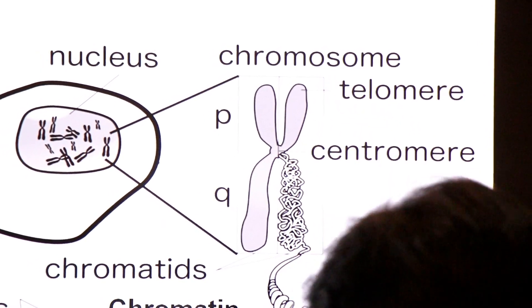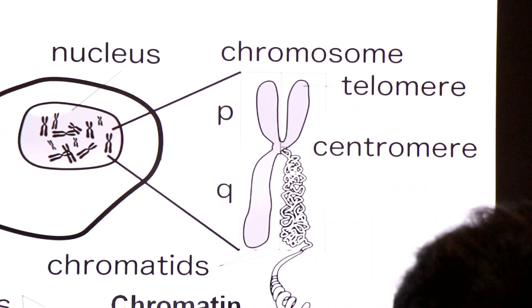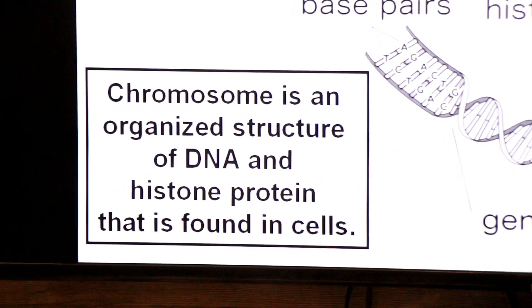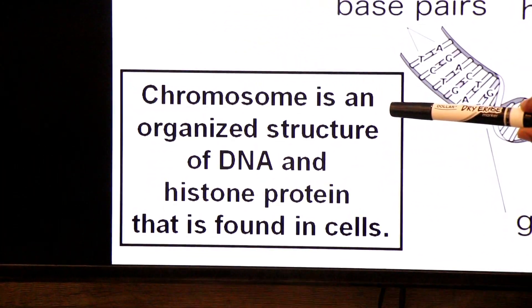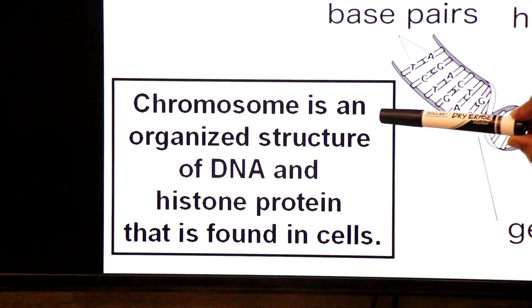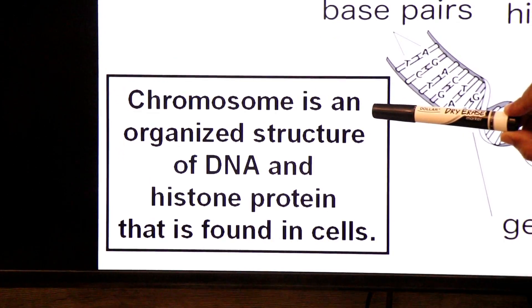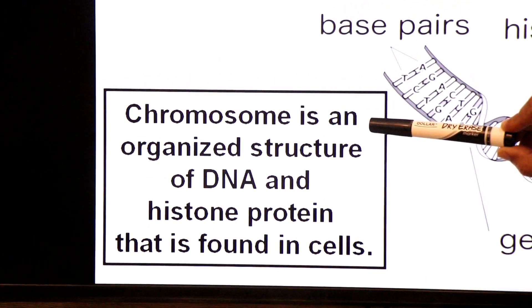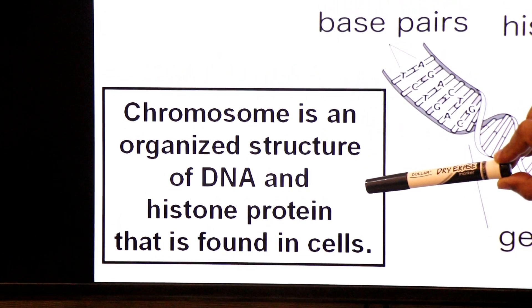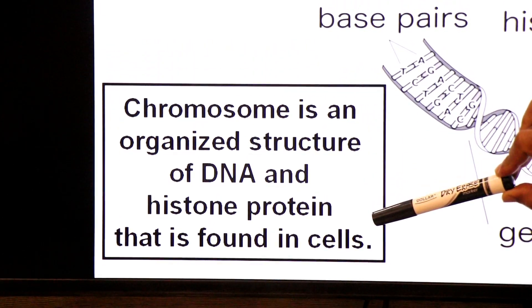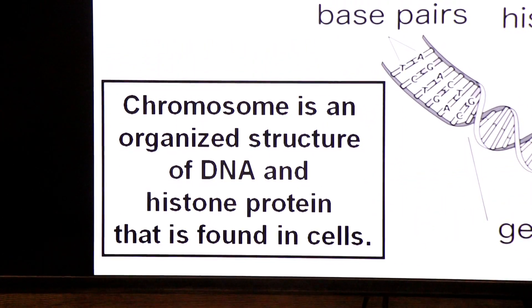Remember, one chromosome is one molecule of DNA. Chromosome is an organized structure of DNA and histone protein that is found in the cells.